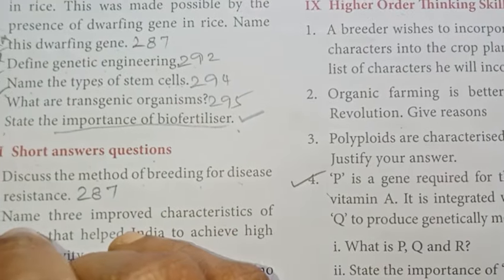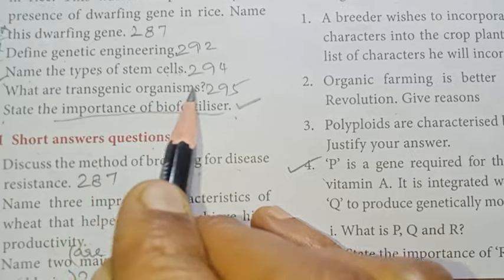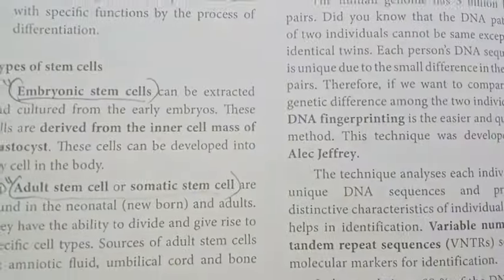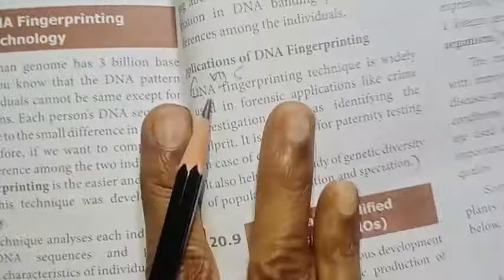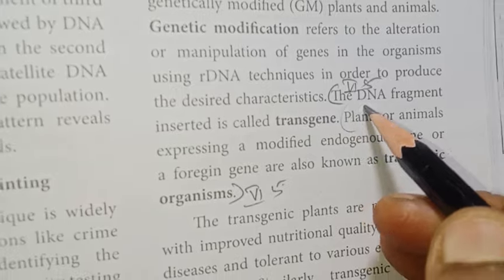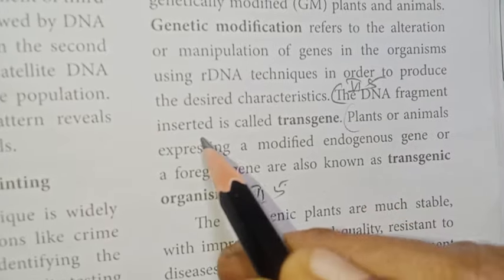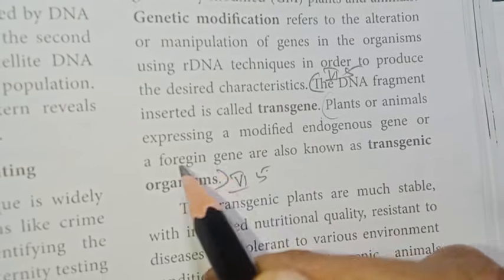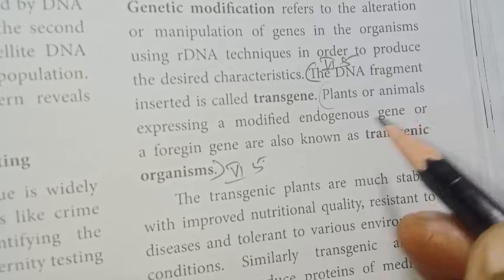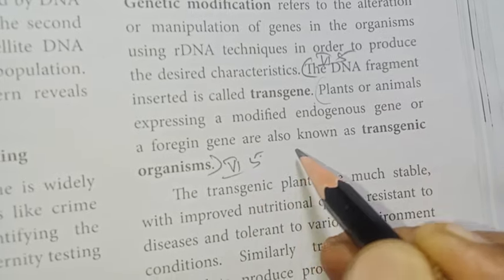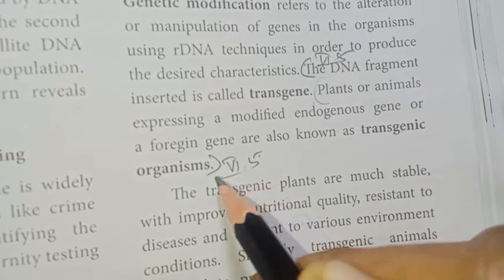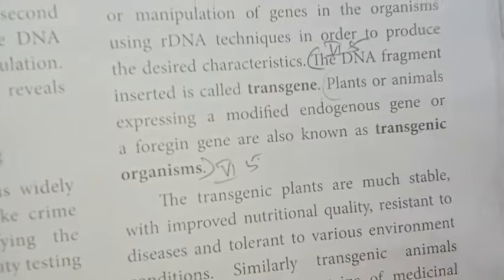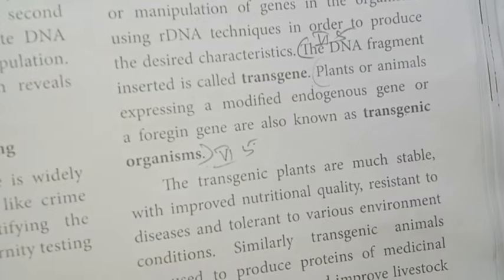Number five: What are transgenic organisms? Page 295. The DNA fragment inserted is called a transgene. Plants or animals expressing a modified endogenous gene or a foreign gene are also known as transgenic organisms.